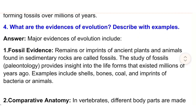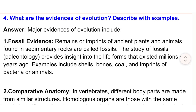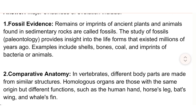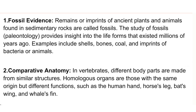4) What are the evidences of evolution? Answer: Major evidences include: 1) Fossil evidence — remains and imprints of ancient plants and animals found in sedimentary rocks. The study of fossils, paleontology, provides insight into life forms that existed millions of years ago. Examples include shells, bones, coal, and imprints of bacteria or animals.